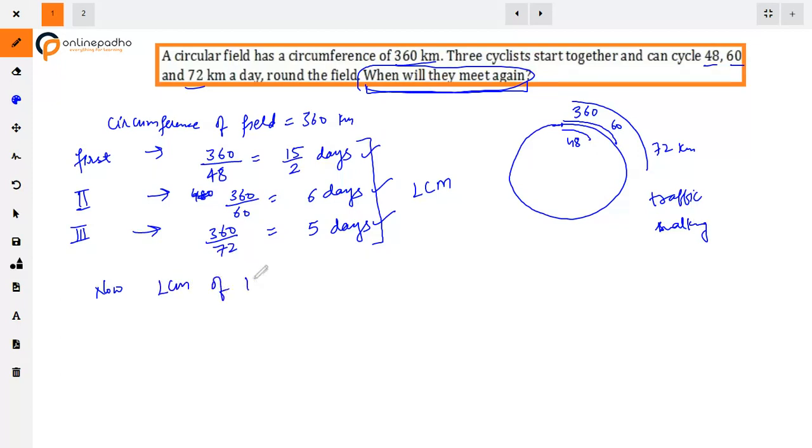The LCM here is of 15/2, 6, and 5. Since there is a fraction, for LCM of fractional numbers, what we do is: LCM of the numerators (15, 6, and 5) divided by HCF of the denominators (2, 1, and 1).